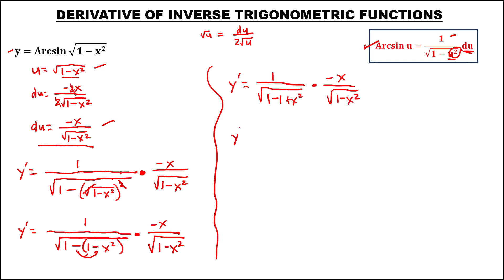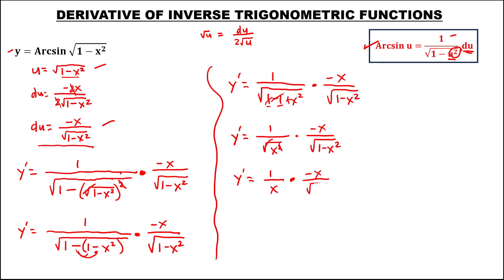Then we have y prime equals 1 over — this positive 1 and negative 1, this 1 is 0 — so we have the square root of x squared, times negative x over the square root of 1 minus x squared. So y prime equals 1 over — we can cancel now this radical — so over x, times negative x over the square root of 1 minus x squared. Then we can cancel this x, so y prime equals negative 1 over the square root of 1 minus x squared.